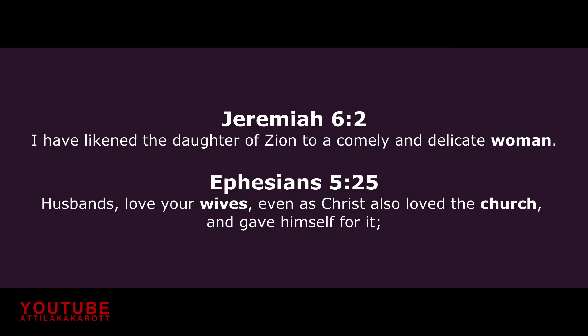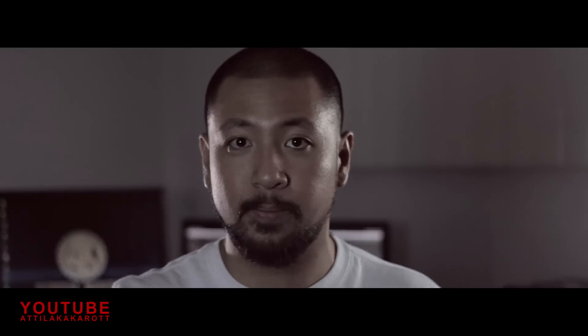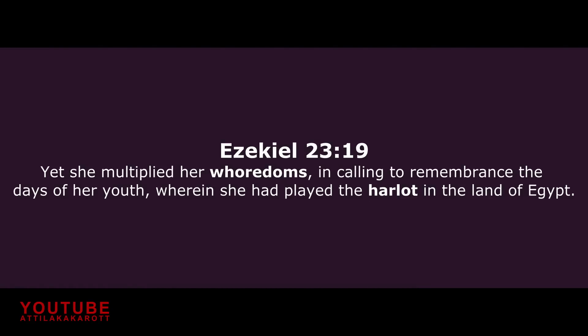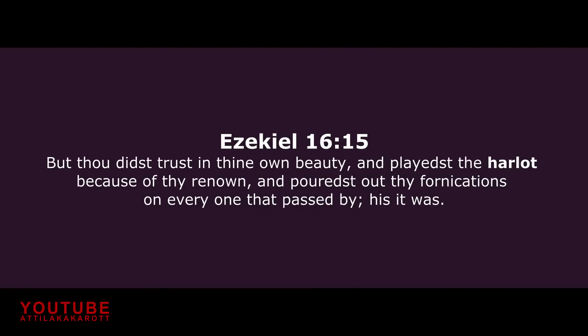In the Bible, a woman is a symbol for a church — God's true church. That's in Jeremiah 6:2. Also in Ephesians, Paul says that the church is the bride of Christ. So a woman represents a church in the Bible. An apostate church is a harlot — a woman that does whoredoms, God says. You can find it in Jeremiah, Ezekiel, Isaiah, Amos, and Proverbs. Ezekiel 16 talks about God's true church becoming an apostate church, and God calls them a harlot. So a harlot in Bible prophecy is a symbol for an apostate church.